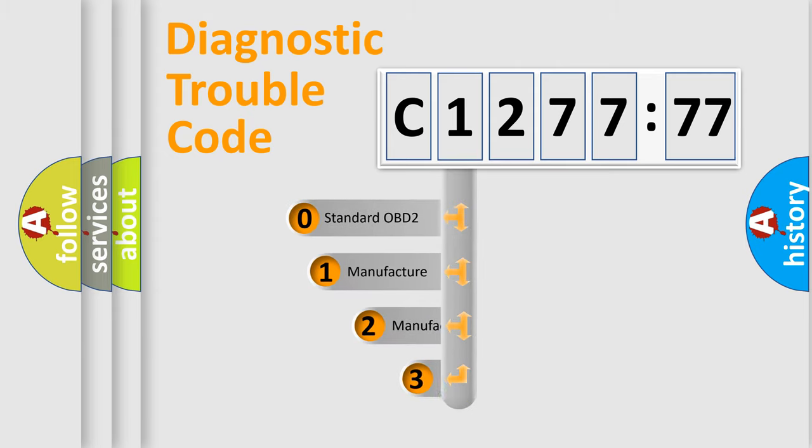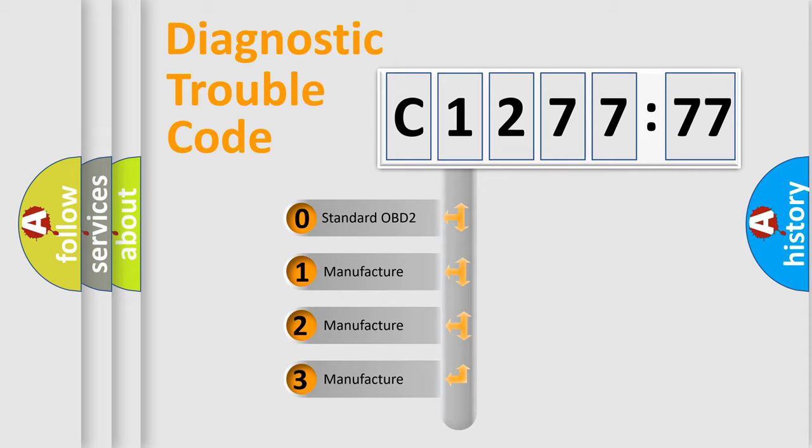Powertrain, Body, Chassis, and Network. This distribution is defined in the first character code.